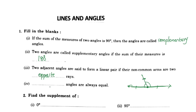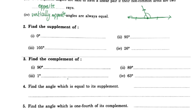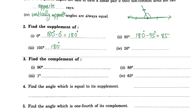Next, find the supplement of zero degrees. For supplementary angles, the sum is 180 degrees. One angle is zero degrees, so we need to subtract zero from 180 degrees.